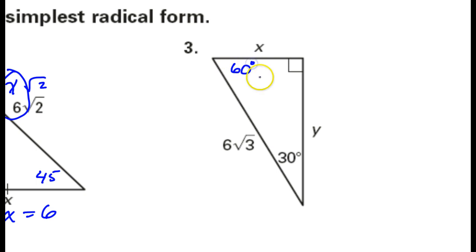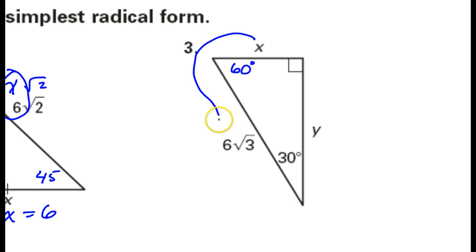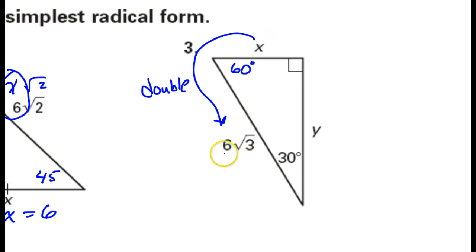Looking at number 3 — I see the 30, so that means this is 60. I always start with the short leg, but I don't know what the short leg is. However, if I had the short leg, the hypotenuse should be double. That means going back the other way, the short leg must be half of this. So half of 6 radical 3 is 3 radical 3.